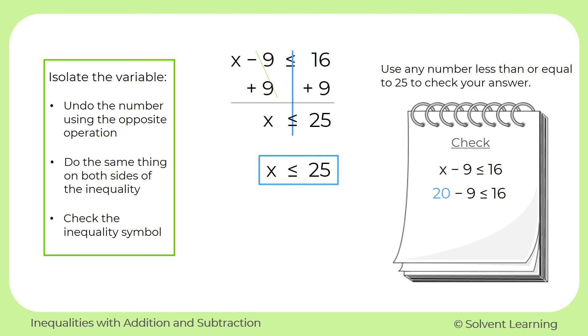I'm going to pick the number 20. So now I have 20 minus 9 is less than or equal to 16. And 20 minus 9 simplifies to 11. So this becomes 11 is less than or equal to 16. And that's true because 11 is less than 16. So this works. That lets us know that we do have the correct symbol in our answer.